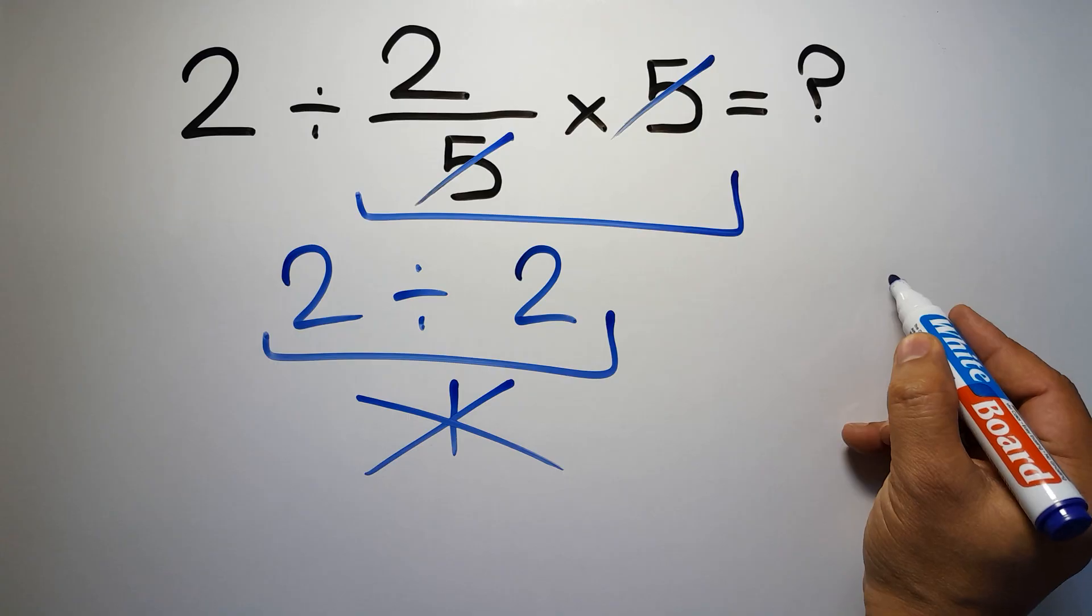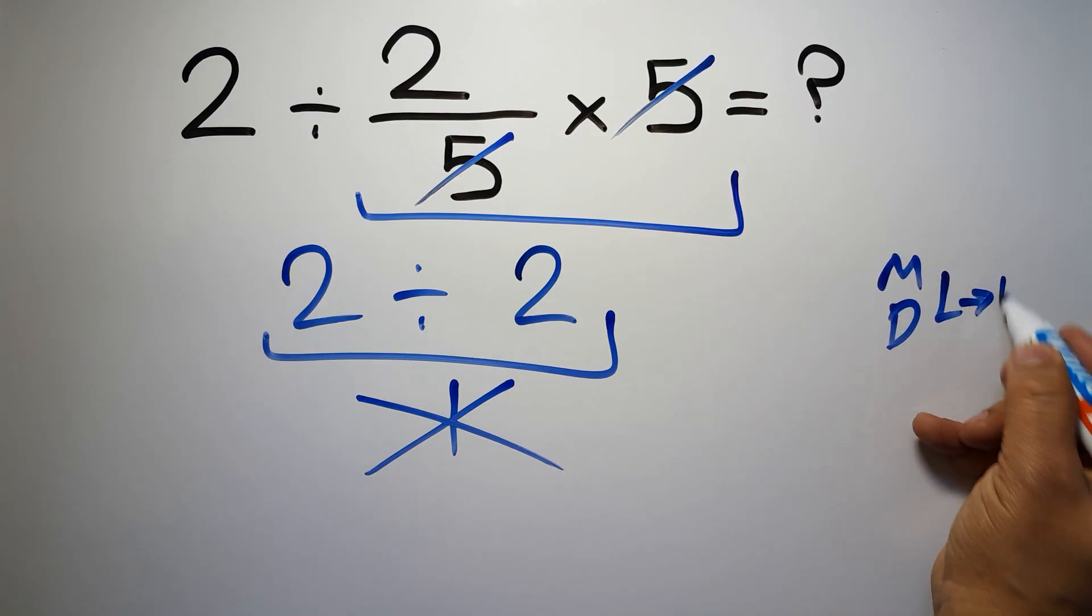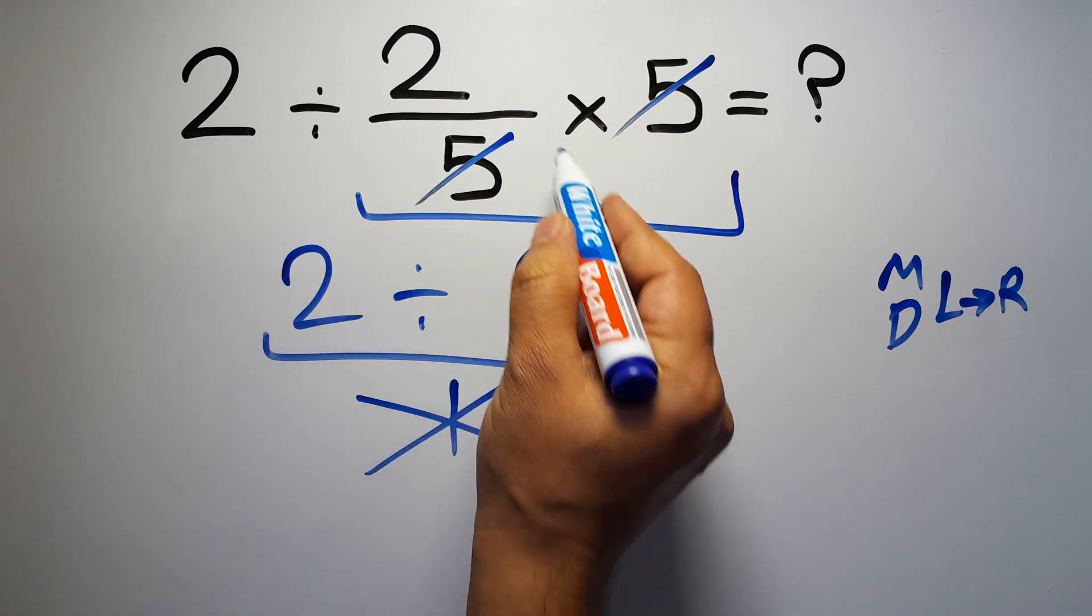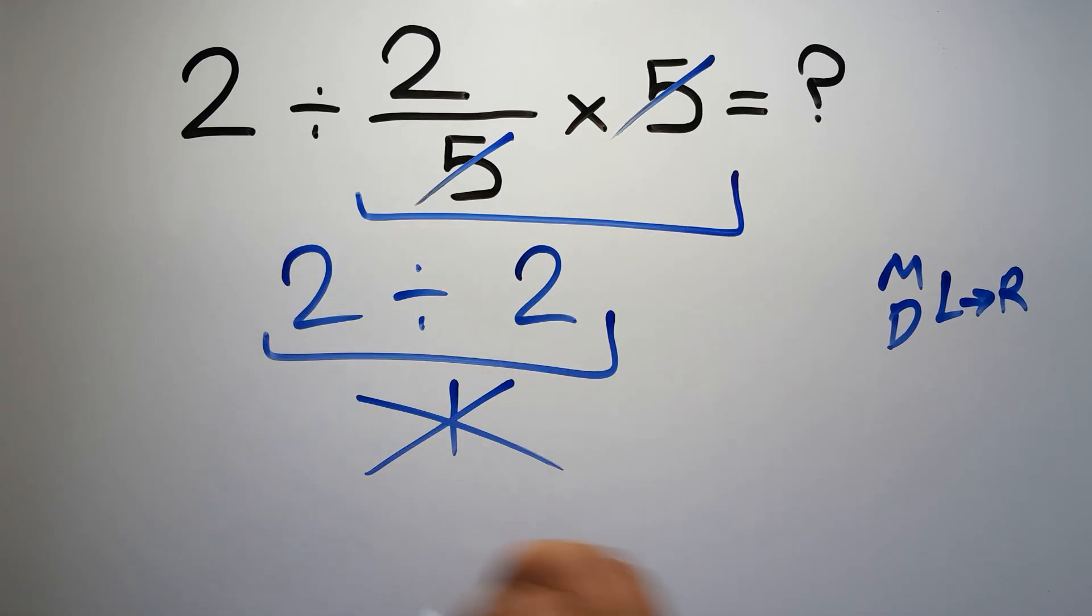according to the order of operations, multiplication and division have equal priority and we have to work from left to right. So here, first we have to do this division, then this multiplication. If we do this multiplication before this division, it is wrong.